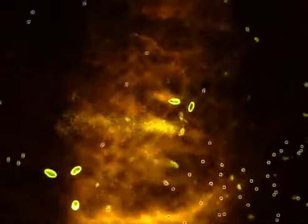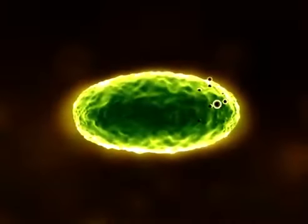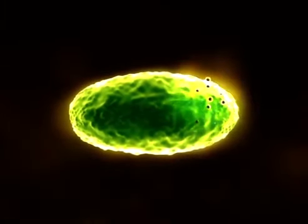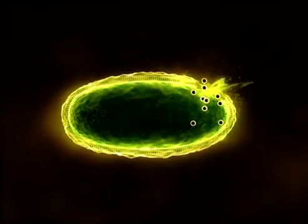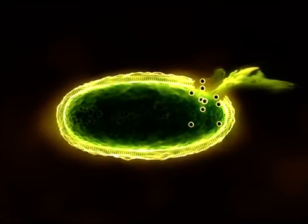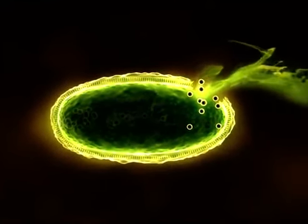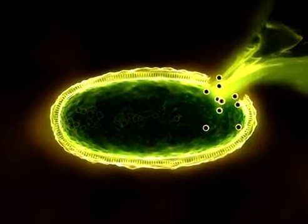The antimicrobial mode of action of silver can be explained in three ways. First of all, cell wall rupture. When AG+ binds to proteins in the cell wall, the wall could break and the contents of the cell could leak out, resulting in the death of the bacterial cell.